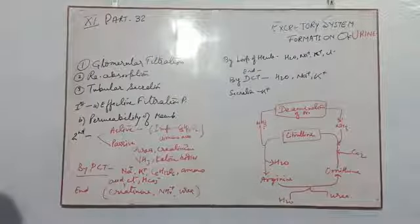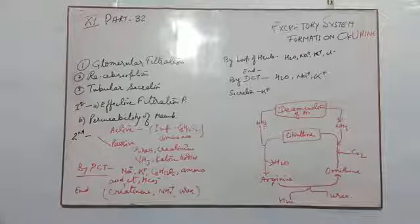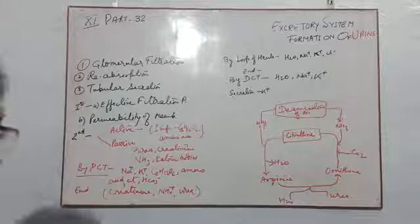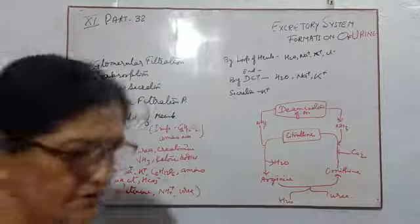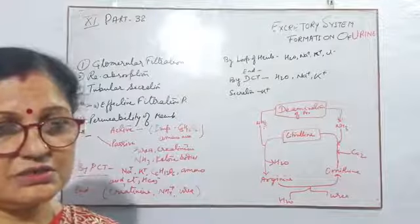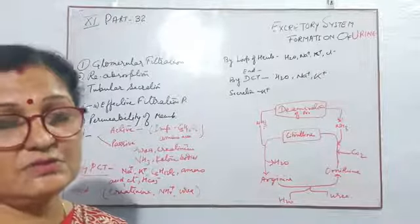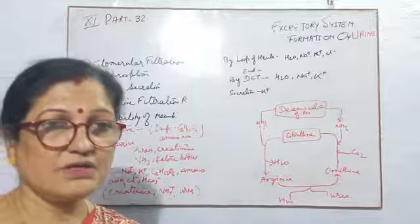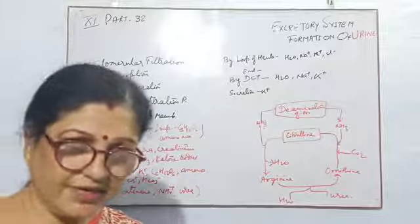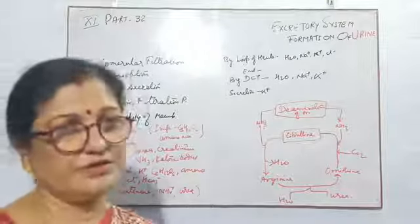Now I will explain some terms by which you can measure or calculate the amount of urine forming in your body in 24 hours. But before that, we will go over the ornithine cycle.